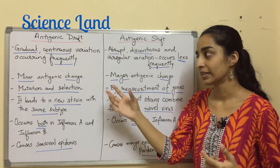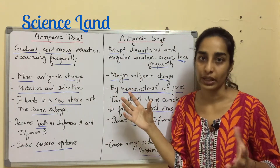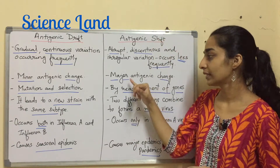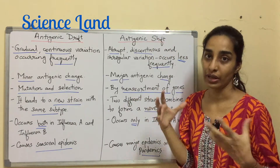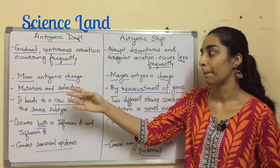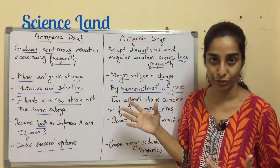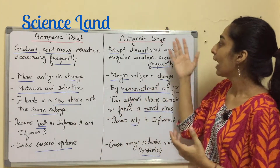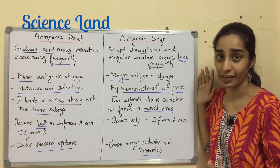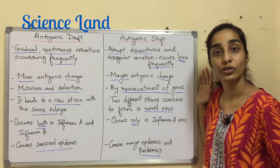Antigenic drift is a minor antigenic change. On the other hand, antigenic shift is a major antigenic change. Antigenic drift is caused by a process called mutation and selection, while antigenic shift is caused by a process called reassortment of genes.